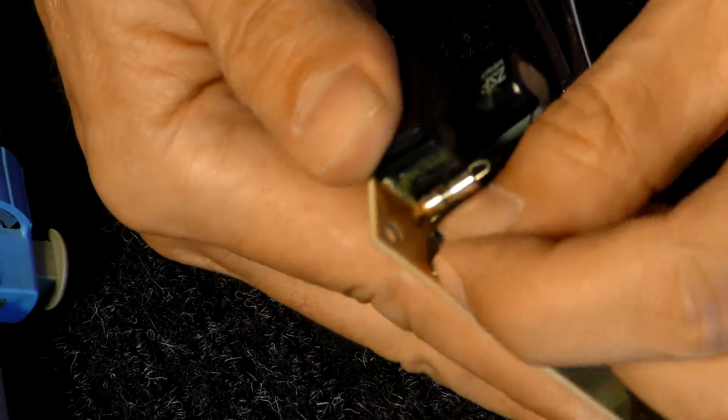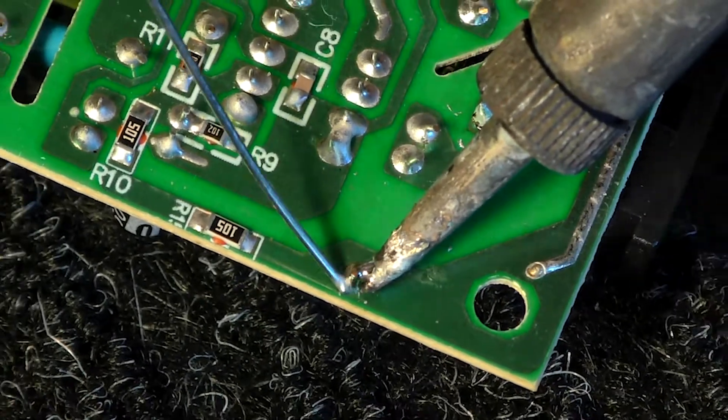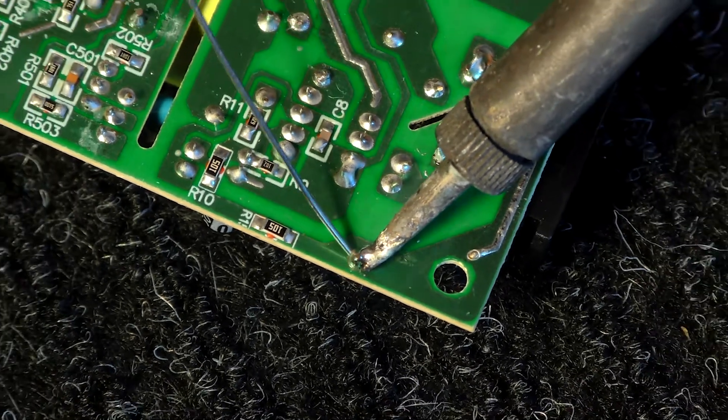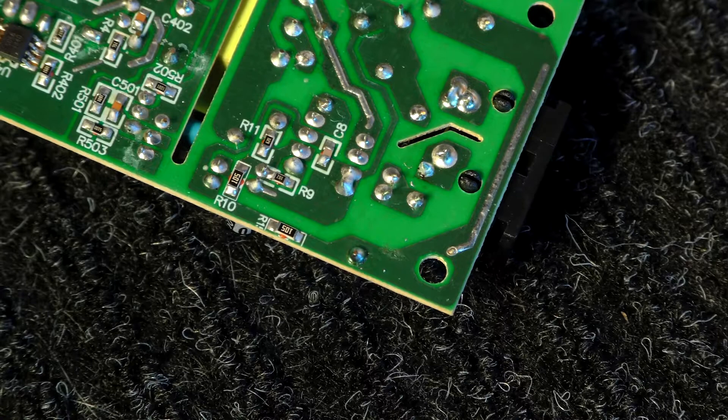After inserting the component into the terminals, preheat the terminal first for a few seconds. Then apply the solder on the tip of the soldering iron until the entire terminal is securely covered with a silver color.